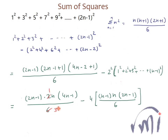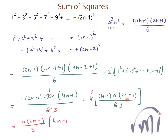Now simplifying: 2 twos are 4, 2 threes are 6. We can take n(2n−1)/3 as a common factor, since we have (2n−1)·n/3 in both terms. Factoring that out, inside the bracket we have (4n−1) from the first term, minus 2(n−1), which gives minus 2n plus 2.